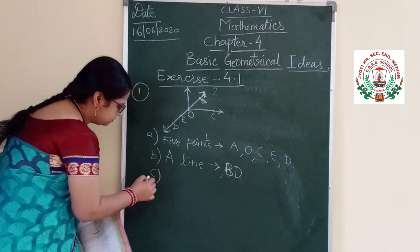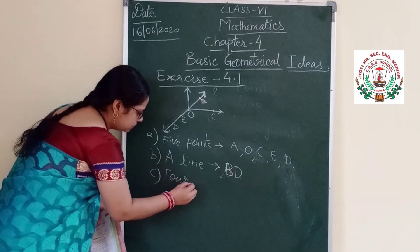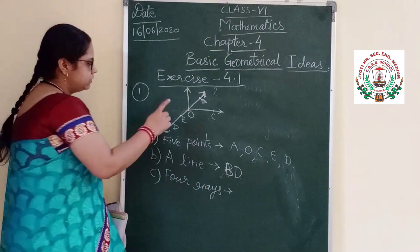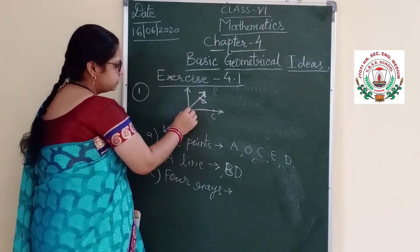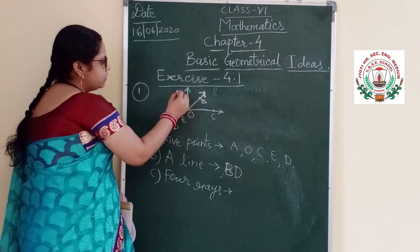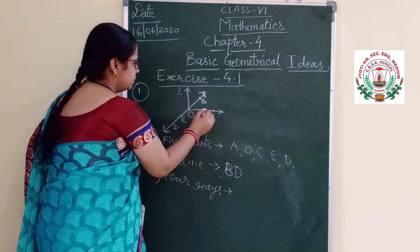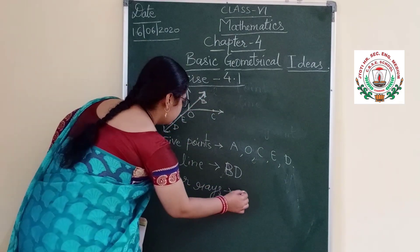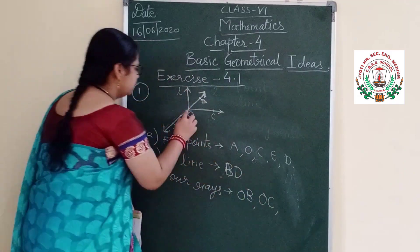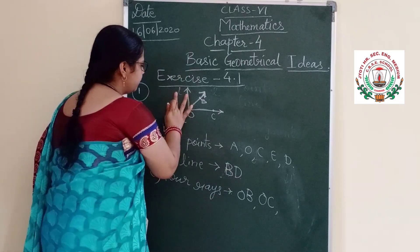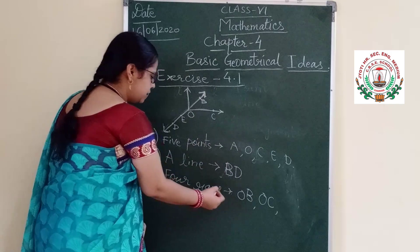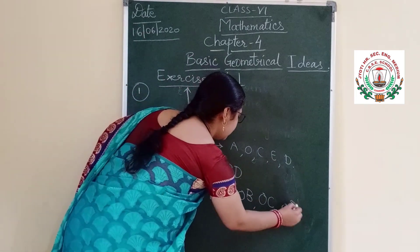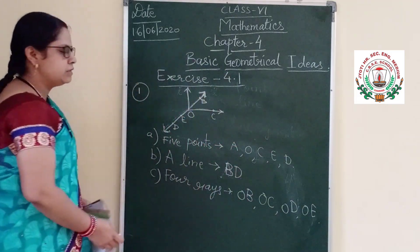Then four of the rays. A ray means starting from one point and going to an arrow — going up to where we do not know. From the figure, the four rays are: O to B, O to C, O to D, and O to E. These are the four rays according to the figure given.